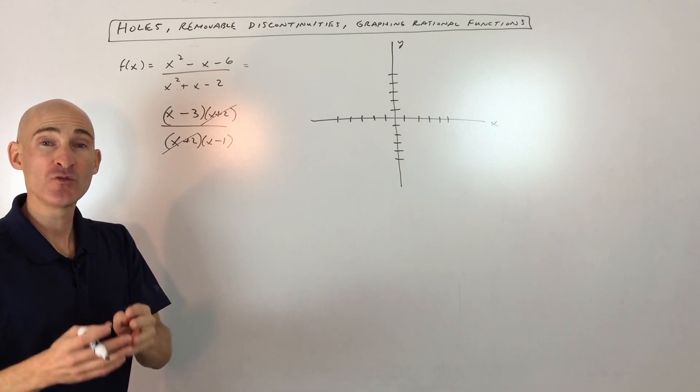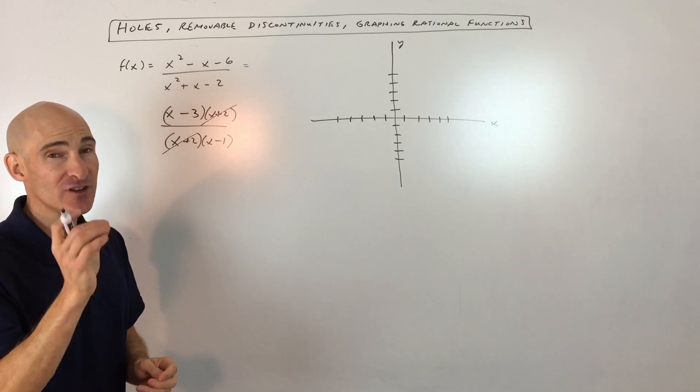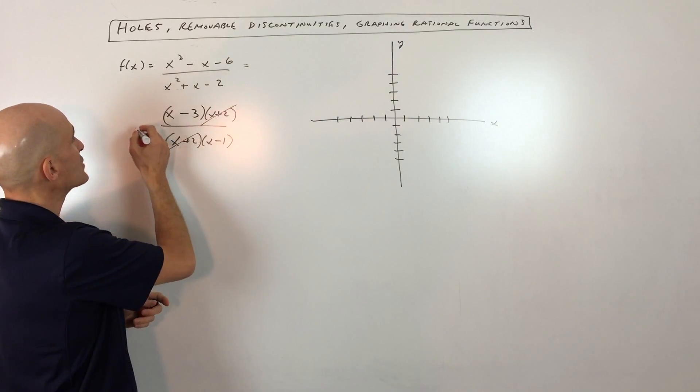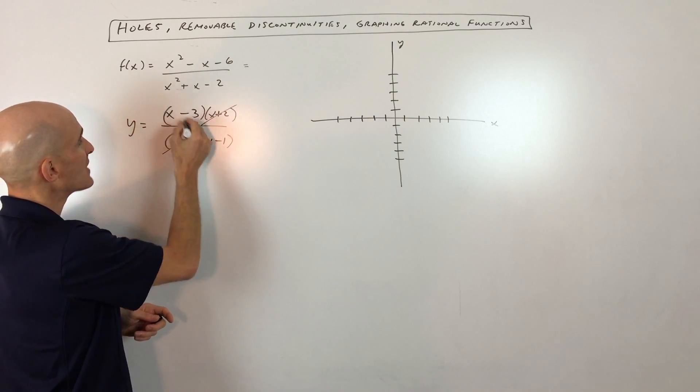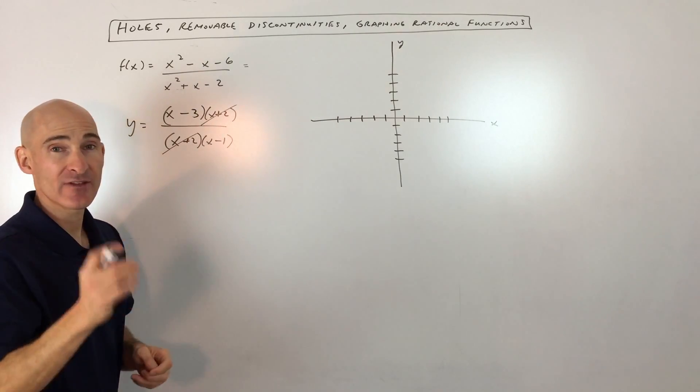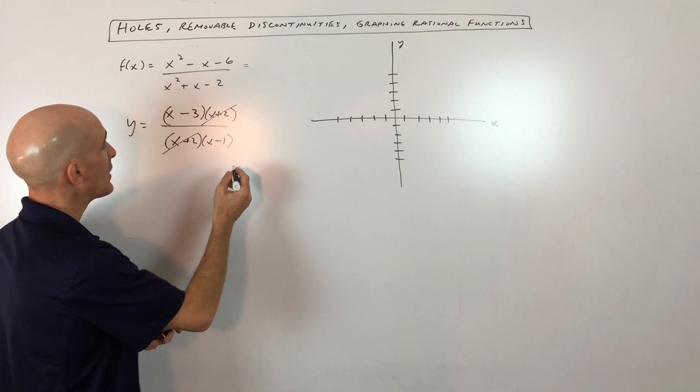Now if you graph it in your graphing calculator, you might not see that hole because it's infinitely small. This graph is actually going to behave like y equals x minus 3 divided by x minus 1, except it's going to have that little hole in the graph. How do you locate where the hole is?